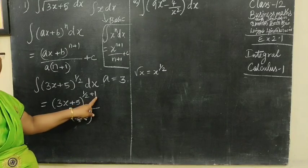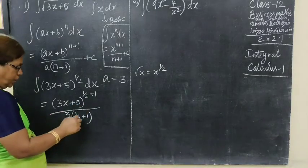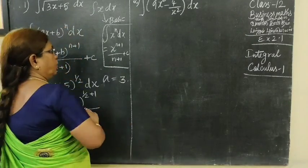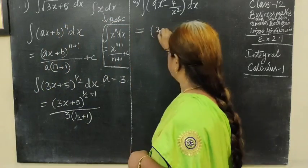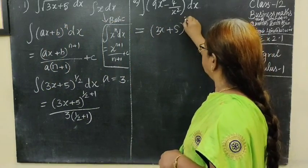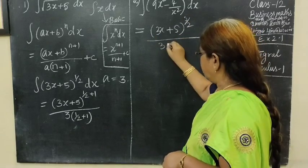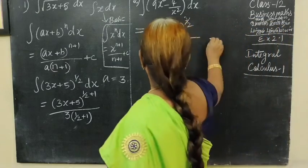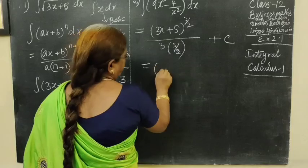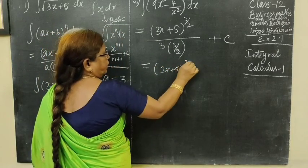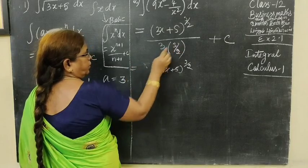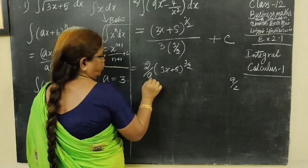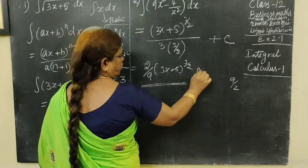Then n is half, so n+1 equals 3/2. In the next step, that is equal to (3x + 5)^(3/2). And 3 multiplied by 3/2 equals 9/2. Reciprocal of 9/2 is 2/9. So this is the answer: (2/9)(3x + 5)^(3/2) plus c.